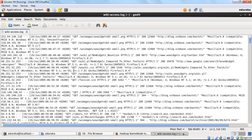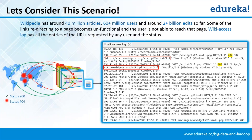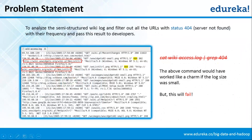Just imagine what kind of loss it would be to Wikipedia if a huge number of users are not able to access the URLs they browse. Let me reiterate the problem: we need to analyze the semi-structured wiki log and filter out all the URLs with status 404, server not found, with their frequency, and pass this result to developers so that they can take corrective actions immediately.